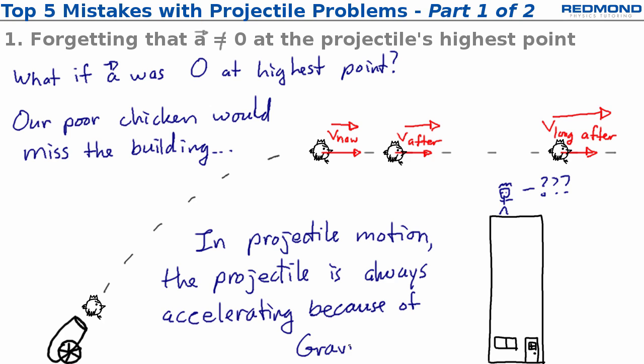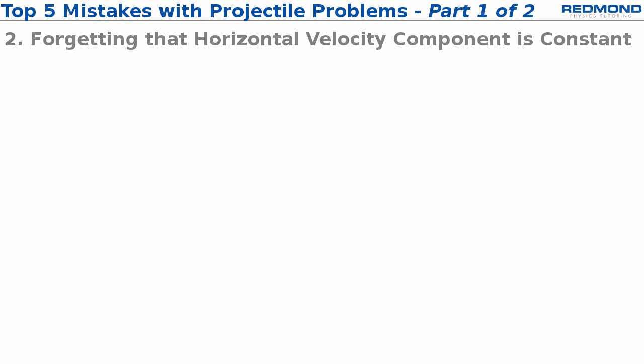And that brings us to the second mistake. Number two is forgetting that the horizontal velocity is constant.